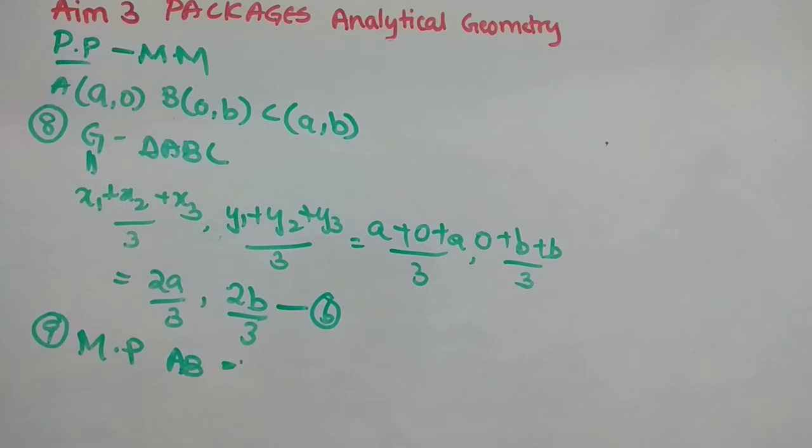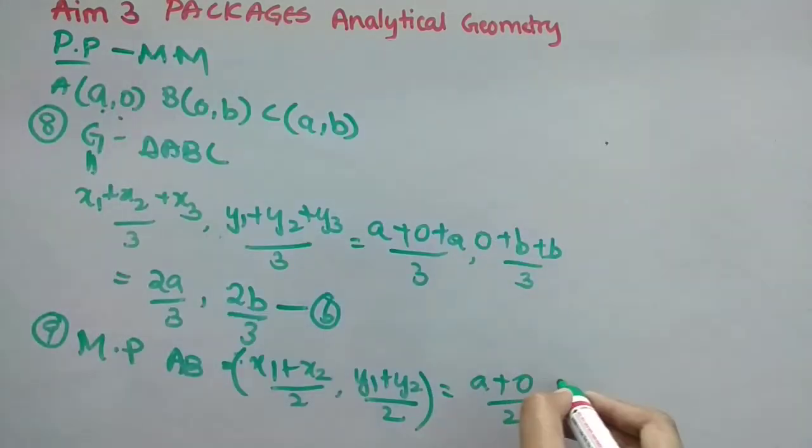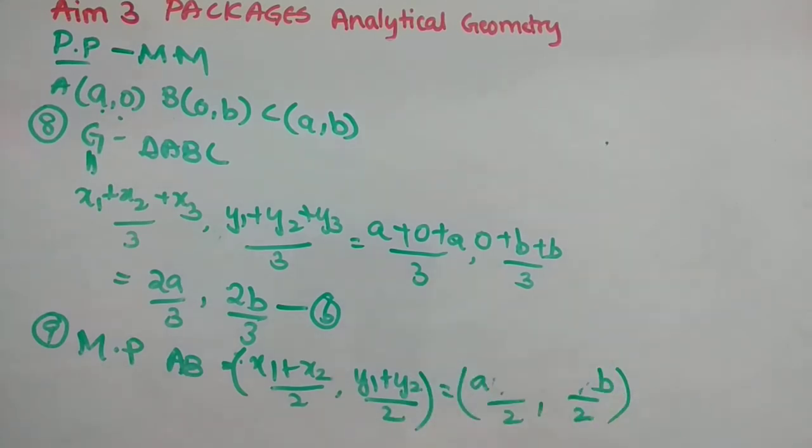So, how to find that? We have to find that using X1 plus X2 by 2, comma, Y1 plus Y2 by 2. So, this is the formula used for that. Now, what is X1? It is A. And what is X2? It is 0 by 2. What is Y1? It is 0. What is Y2? It is B by 2. Now, what is this actually? If you remove all these 0s, 0 plus. Now, A by 2, B by 2. That's it. Simple, right? Now, this is option A. So, just write that A in the middle. You should write the step, previous step also in your notebook.